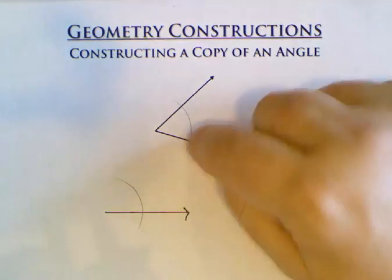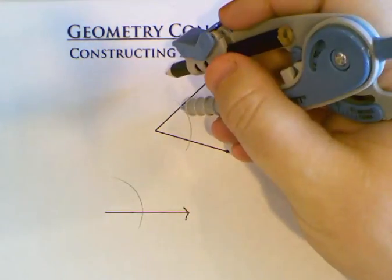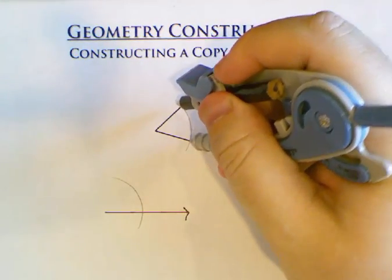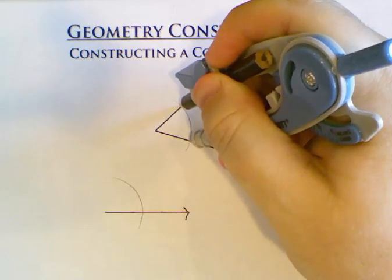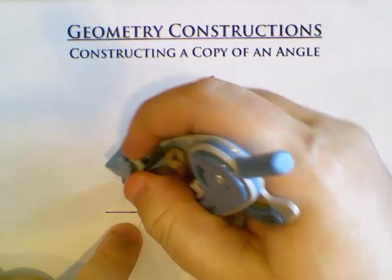Once I have my matching arcs here, I care about these intersection points. I want to know the distance between these two points. So you open up your compass to measure that distance. And I'm going to come down here and measure that same distance out.